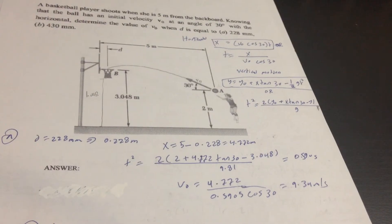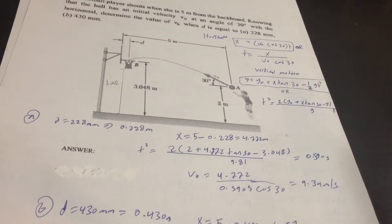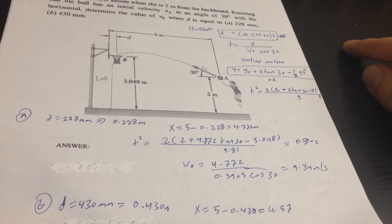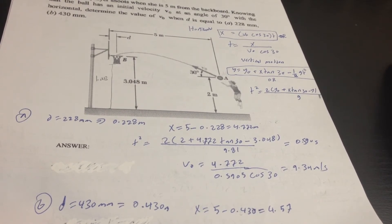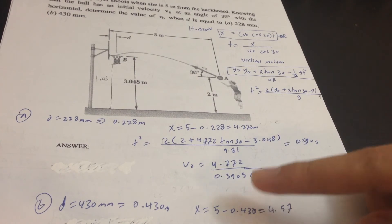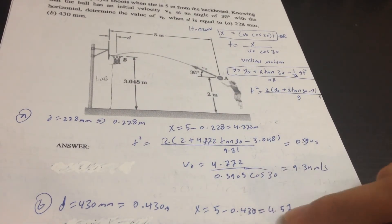And for Part B, also we have to convert 430 millimeters times 0.001, which will give us 0.430 meters. And then we have to do the same idea: just subtract 5 minus this answer, which will give us 4.57.